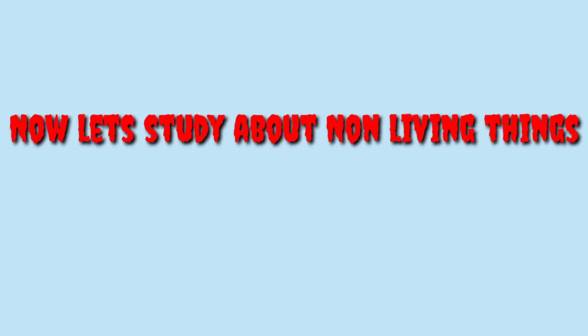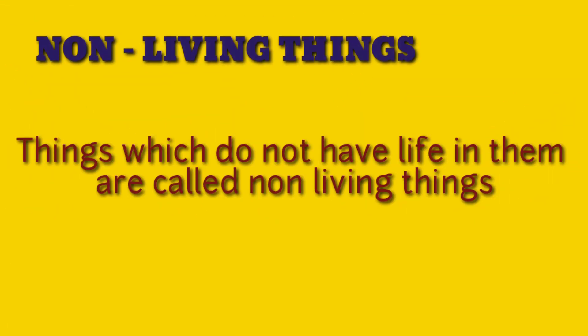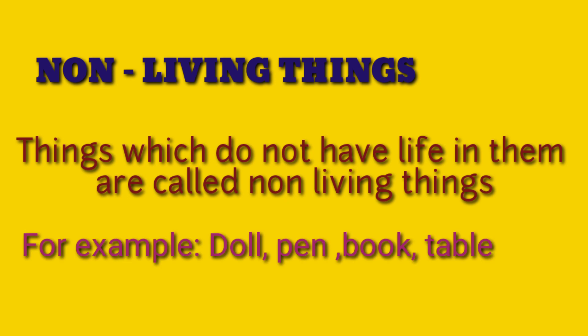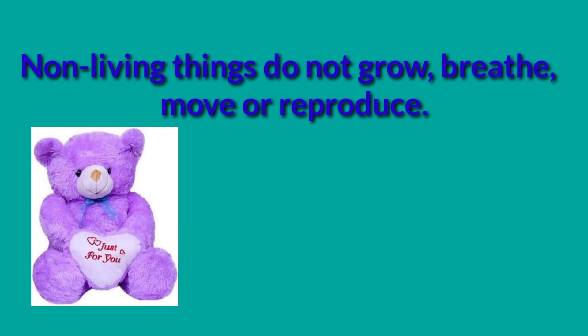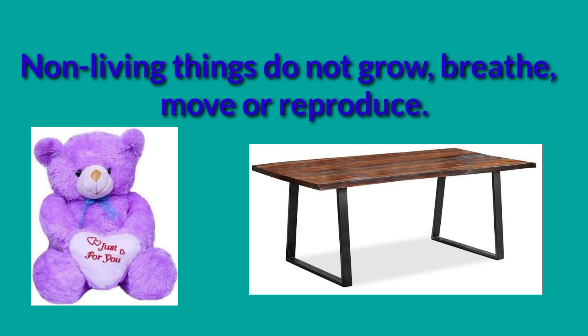Today we are going to study about non-living things. What do you mean by non-living things? Things which do not have life in them are called non-living things. For example, doll, pen, book, table. Non-living things do not grow, they do not breathe, nor do they move, nor do they reproduce. Have you seen a doll growing? No, it does not grow — it is a non-living thing. A table does not move on its own, so a table is a non-living thing.